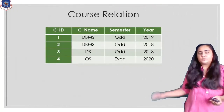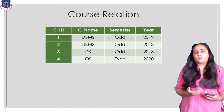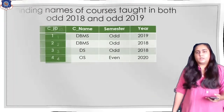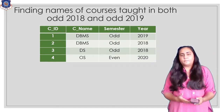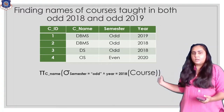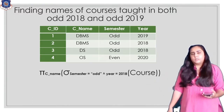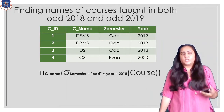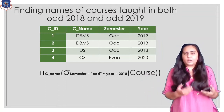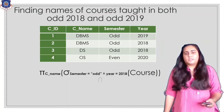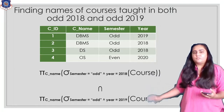For this I'm going to use the course relation, which contains the IDs of different courses, their names, the semester in which they were taught, and the year. Using this relation, let's find names of courses that were taught in both odd 2018 and odd 2019. I'll write a query that fetches courses taught in odd 2018 using the sigma operation to filter rows where semester is odd and year is 2018, extracting only the name column, then intersect with the same query for 2019.